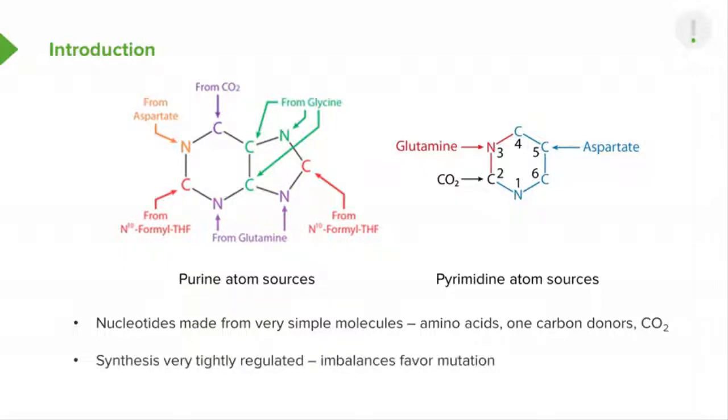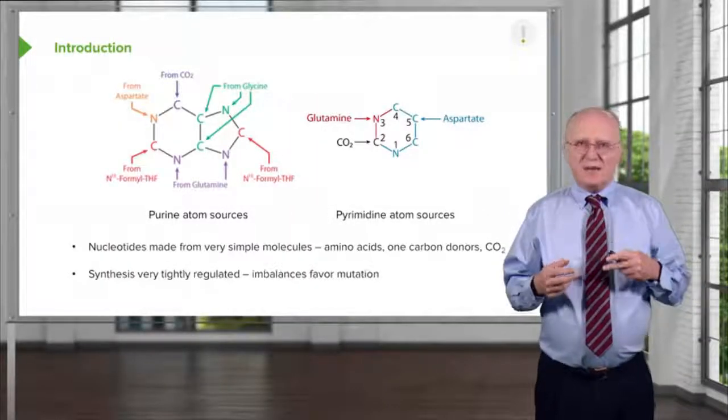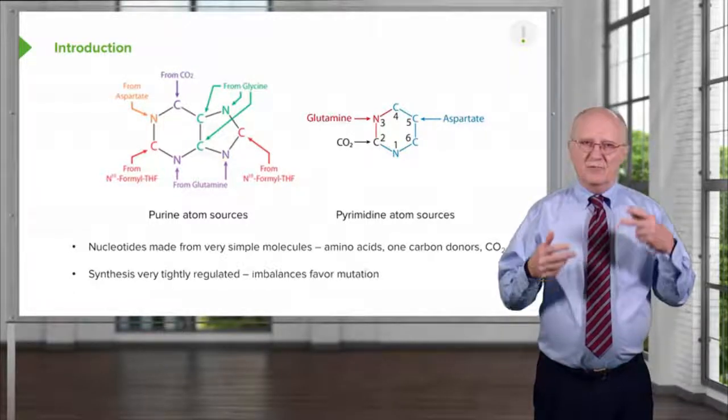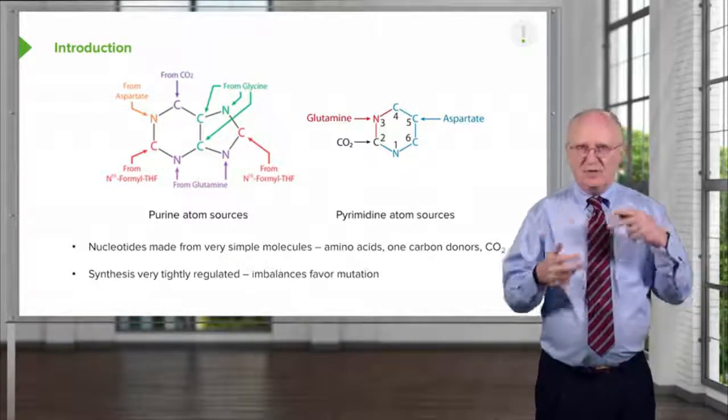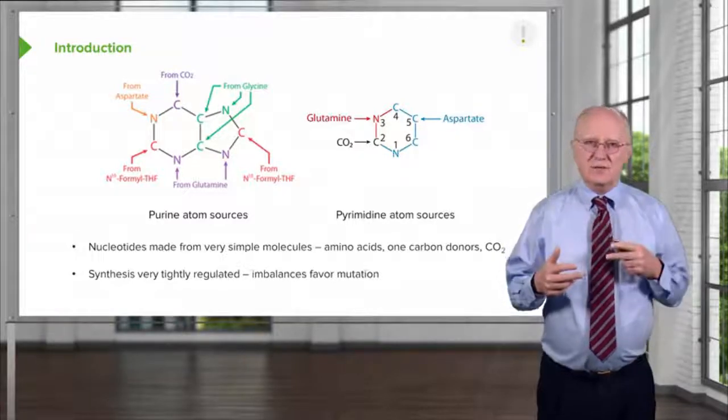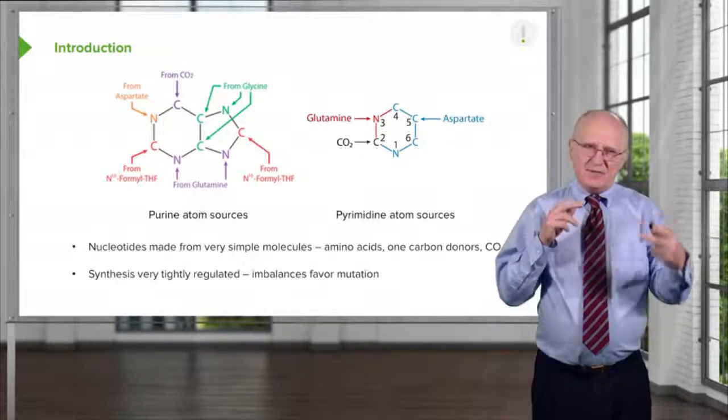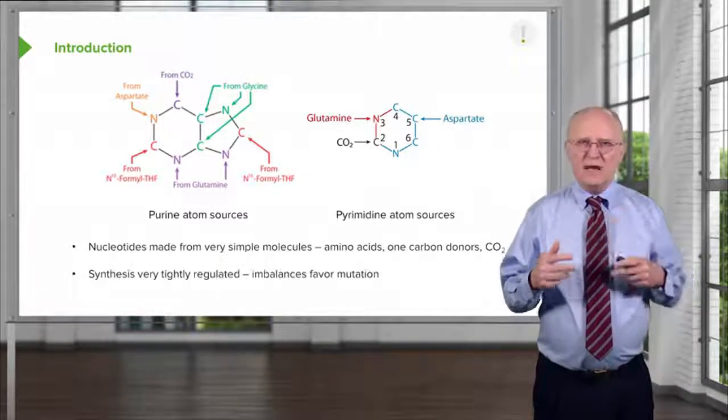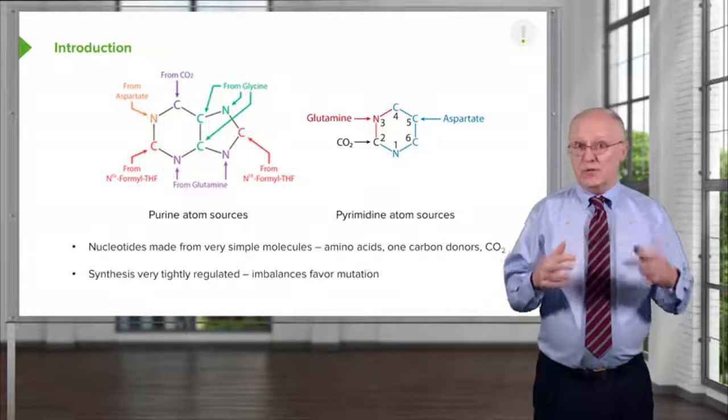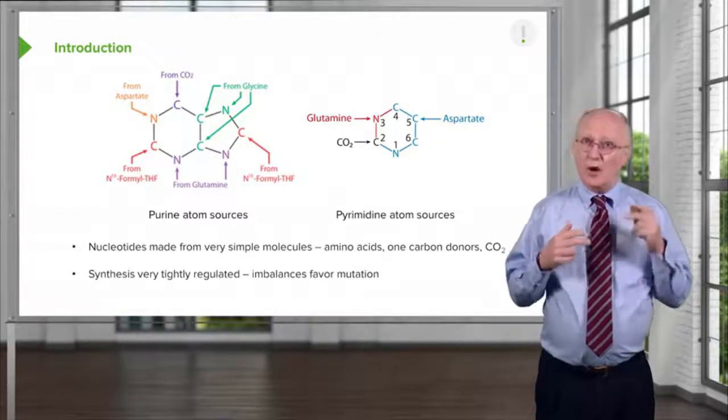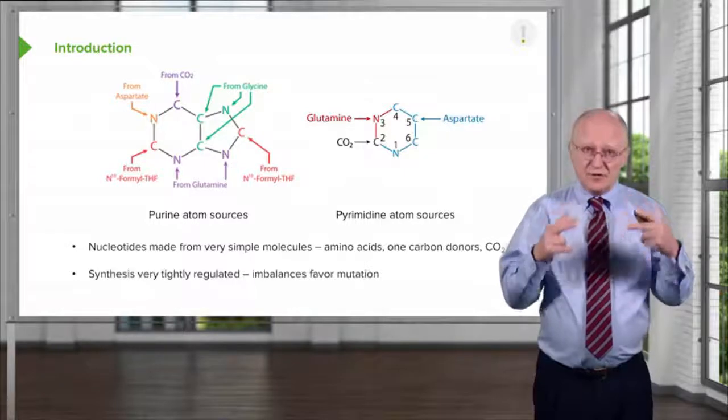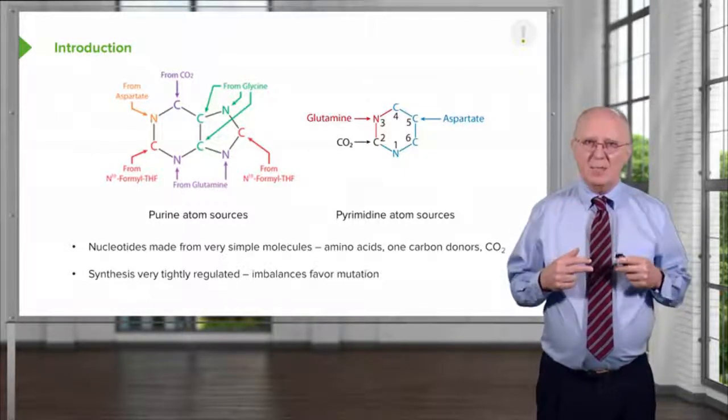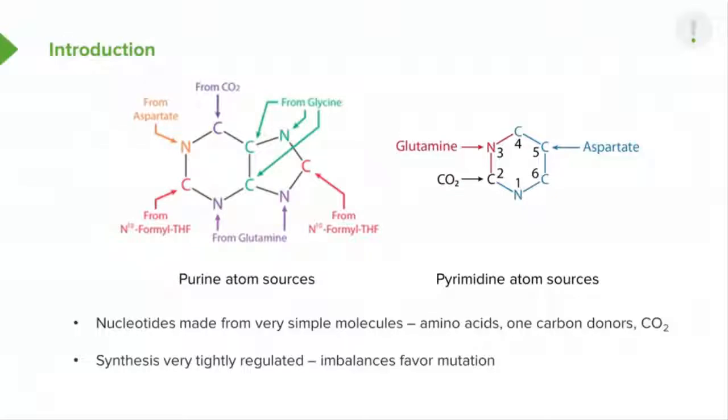The synthesis of the nucleotides is very tightly regulated. This is a very important concept to understand, because the cell needs to have the proper ratio of purines to pyrimidines, and of each of the individual nucleotides compared to each other. The reason for that is that if the cell gets those out of balance in any way, it makes it much more likely that that cell will suffer mutation. Mutations in cells are usually bad, and cells go to extraordinary lengths to avoid having that happen as much as they can.